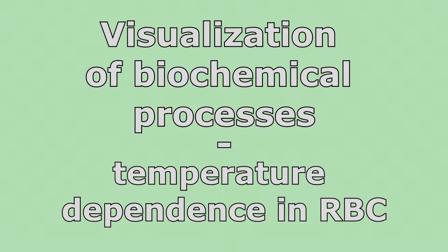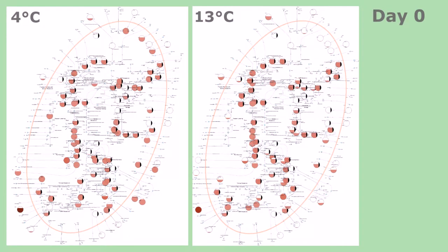Red blood cells were stored in SAG-M medium at 4 degrees Celsius and 13 degrees Celsius to understand the temperature dependence of the metabolic network.